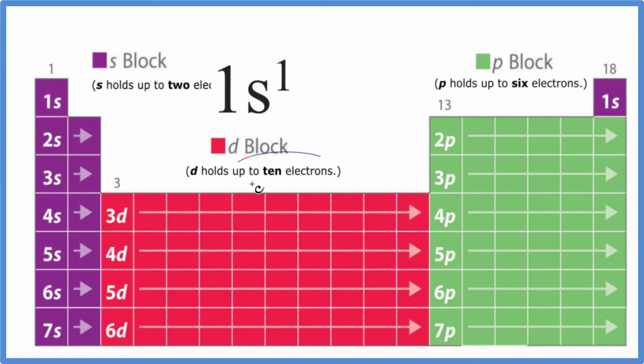When we get over to d, d holds up to 10 electrons. So we have d1, 2, 3, all the way up to d10. And then in the p block, all of the elements will end with p1, p2, p3, p4, p5, p6. p holds up to 6.